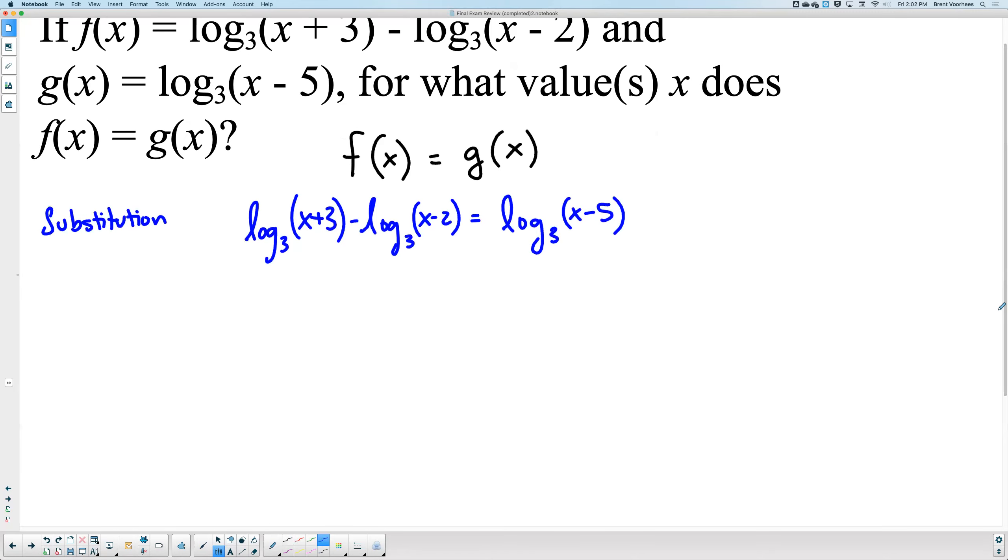Okay, now what do you think we could do to try to solve this problem? Can I just say, oh, they're all log threes, cancel, cancel, cancel? Not yet, because it's not one-to-one property. We'd have to do a quotient property first. Very good. Quotient, we're gonna do the quotient property. So what does the quotient property tell us? If you have two or more logs that have a subtraction involved anywhere, what can I do with those?